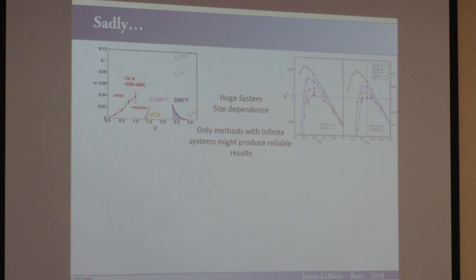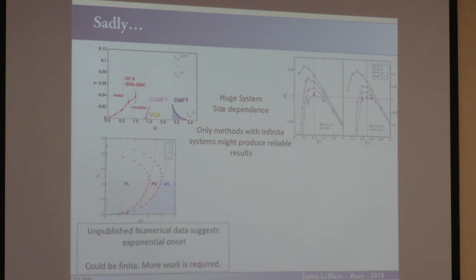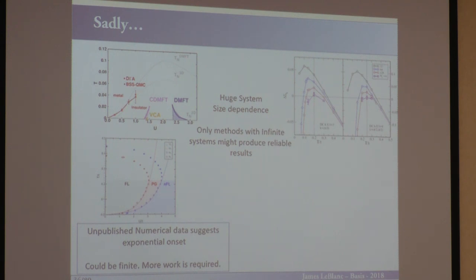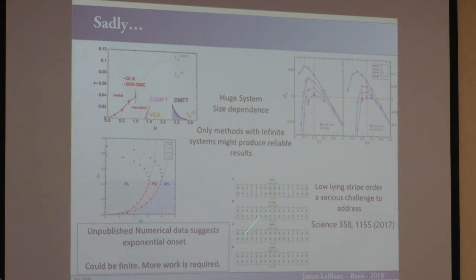Finding convergence with system size is really challenging. Things like this force new numerical techniques to be developed. We've been working on this and have similar-type curves to the DΓA results, also with a low-U curve, but we think it looks more exponential rather than linear. But it's not been published because from only one numerical technique, we have no idea if we have some internal bias. There's also another issue: right as you go toward T=0, there are a series of low-lying stripe-order phases that are a very serious challenge. A subset of the Simons collaboration published a paper in Science where they tried to understand different charge stripe orderings of different lattice spacings and figure out which had the lowest energy states.